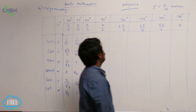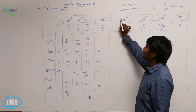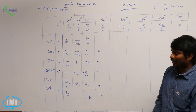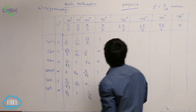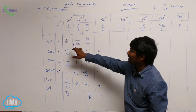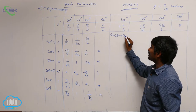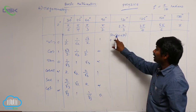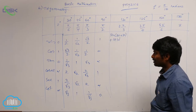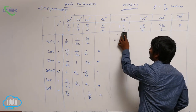Now let us go for 120 degrees. 120 degrees can be written as 90 plus 30 or 180 minus 60. If I write it as 90 plus 30, it is in the second quadrant where sin is positive. So sin(90 + 30) gives cos 30, because for 90 the sin becomes cos. Cos 30 is root 3 by 2, so sin 120 equals root 3 by 2.